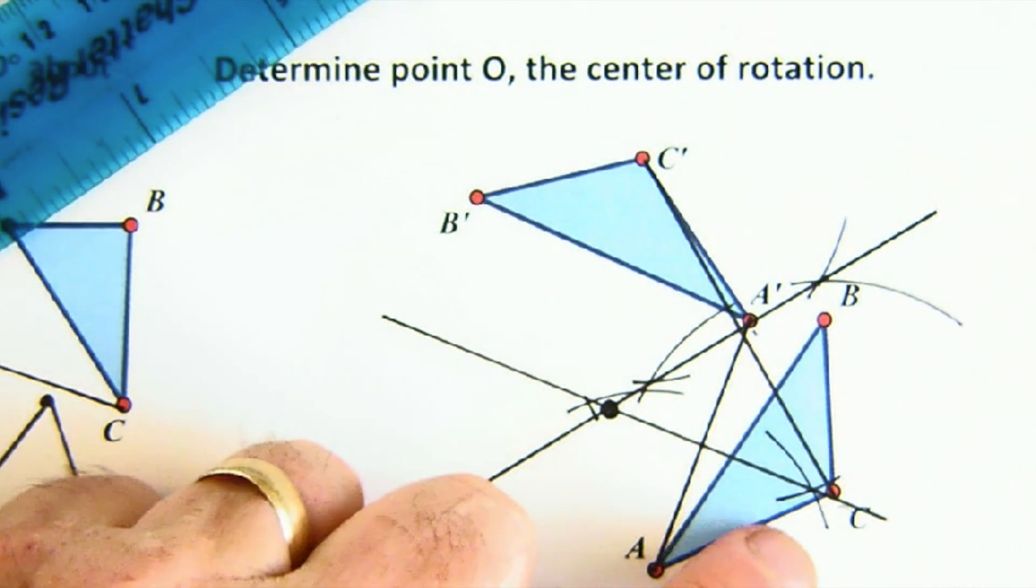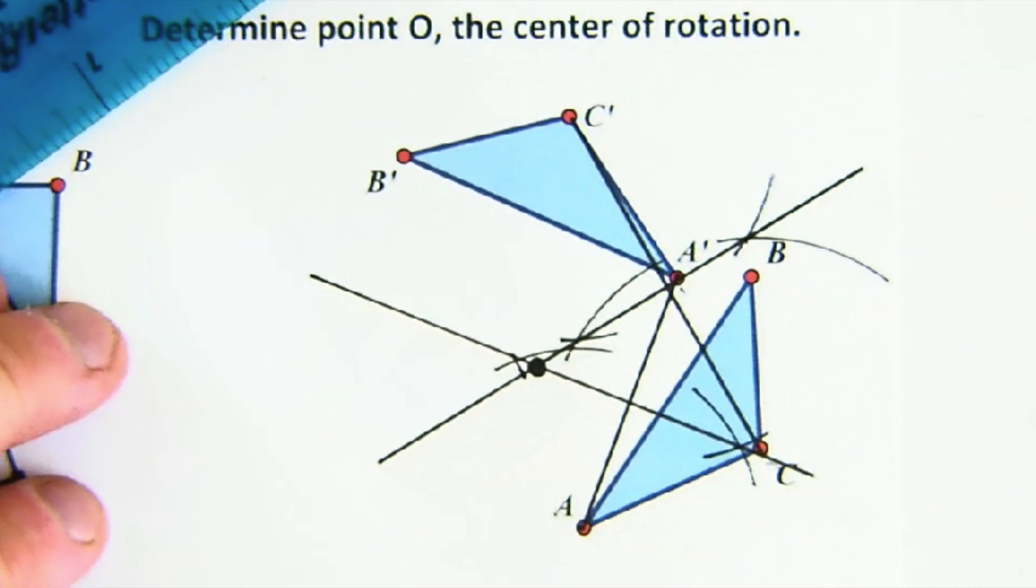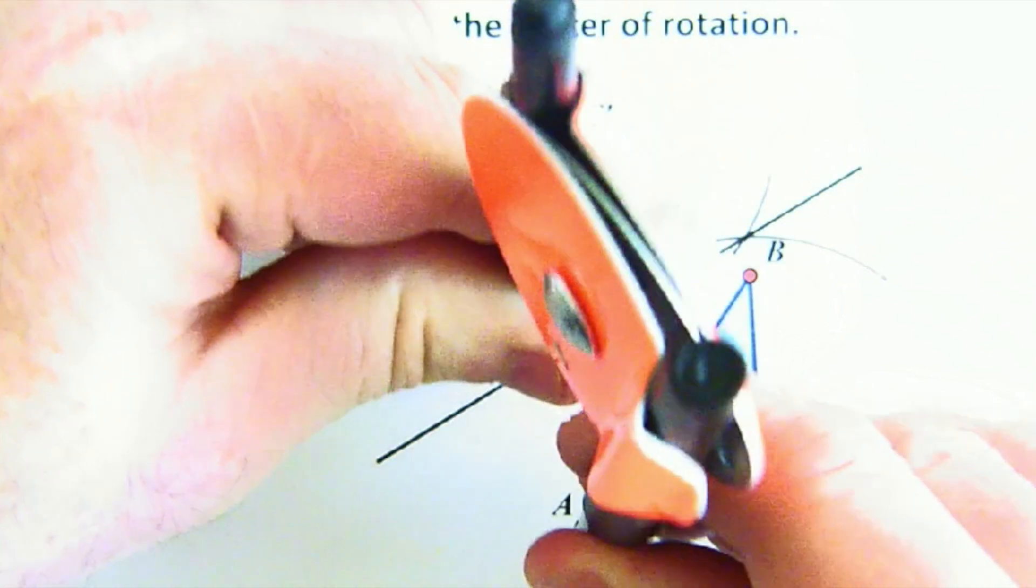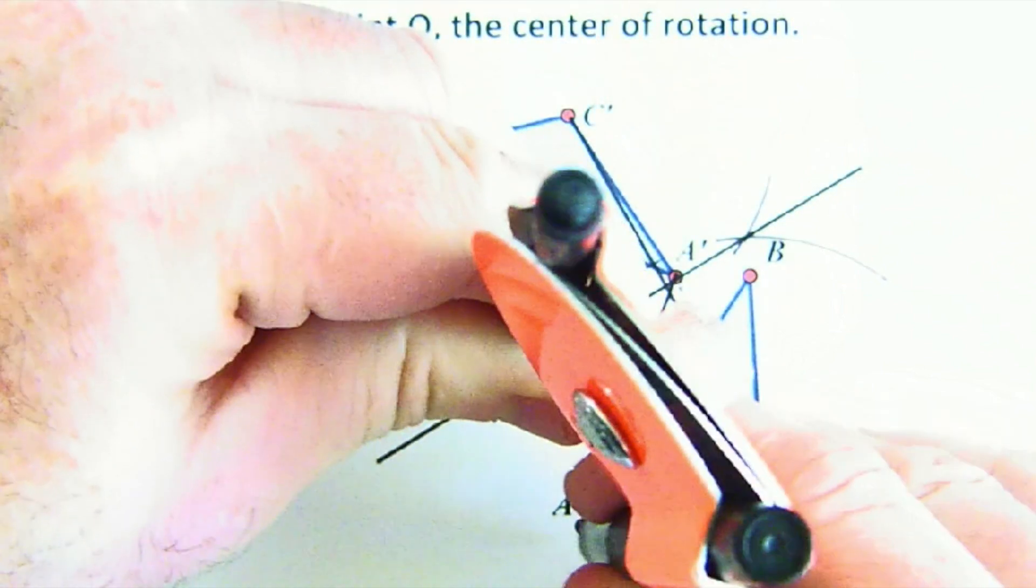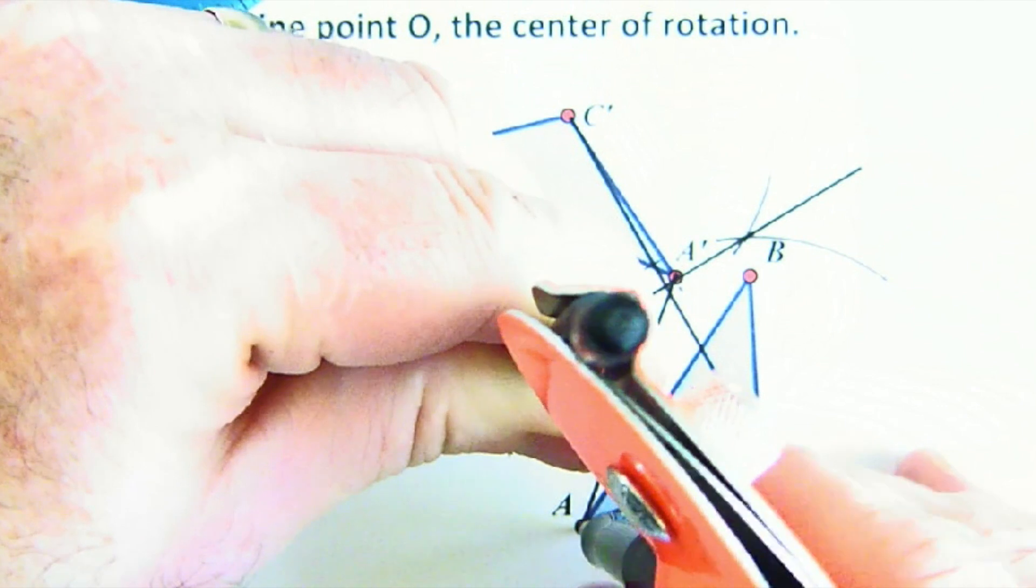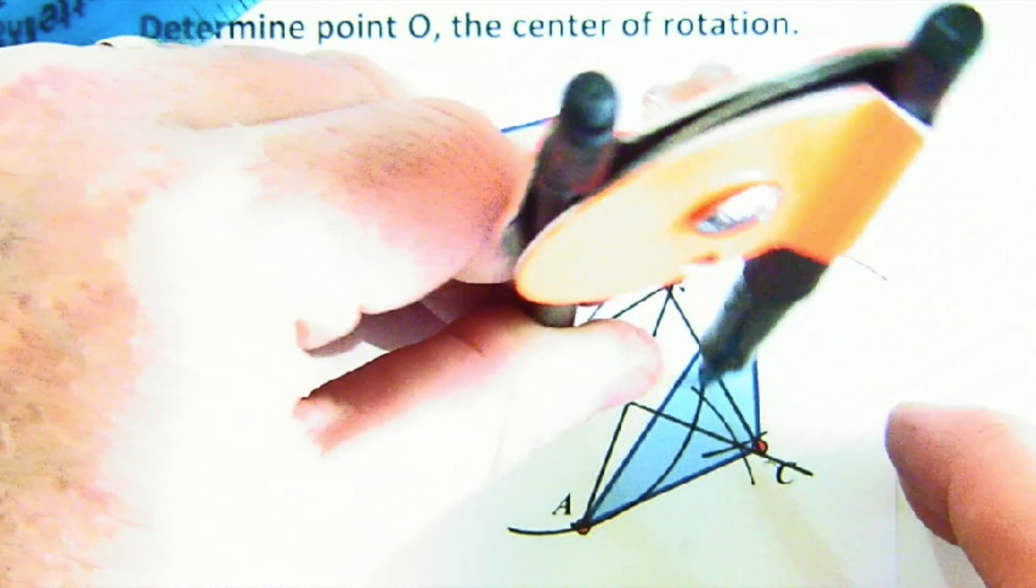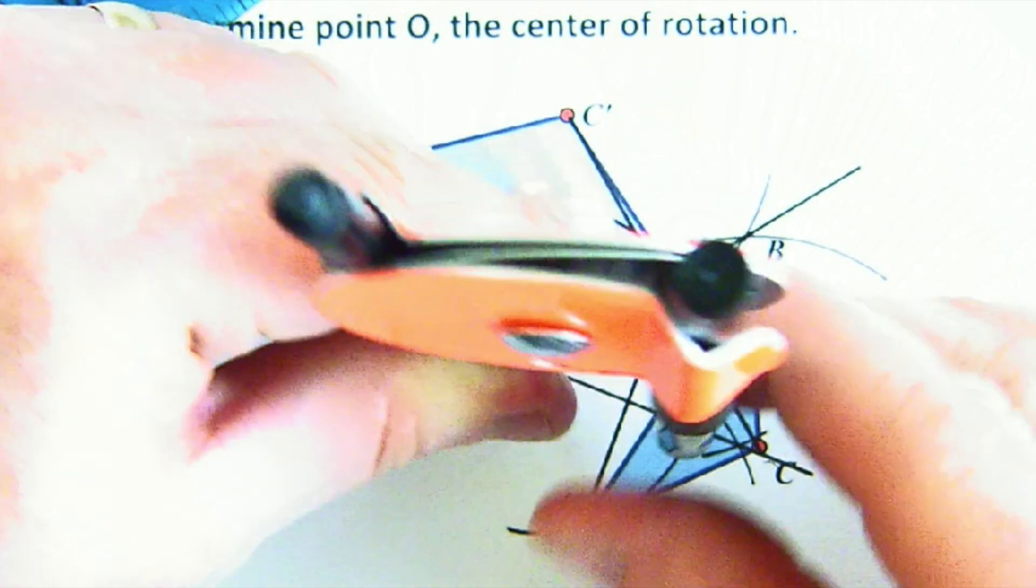Now I can see I'm out a little bit here, so I might not be exact. But I should be able to place my pointer on the center and on A, and I should be able to make my arc, and it should go through A and A prime, which it did. That's pretty good.